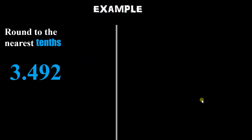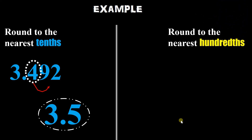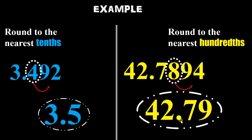Example tayo: round to the nearest tens — ibig sabihin nasa decimal tayo. Yung tens ay yung 4. Ang kasunod ay 9 — mataas sa 5, ibig sabihin 5 and above, kaya i-rround natin to 3.5. Ngayon dito naman, round to the nearest hundreds. Yung given natin ay 42.7894. Sa 100 place, yun yung 8. Kasunod ay 9 — 5 above, ibig sabihin mag-add tayo ng isa. Kaya ngayon magiging 42.79 na tayo.